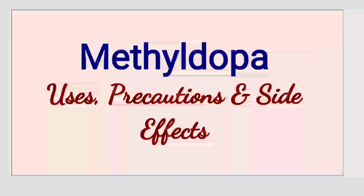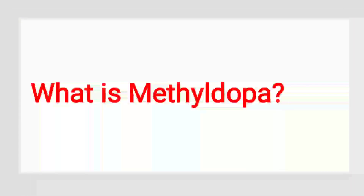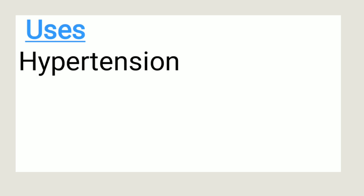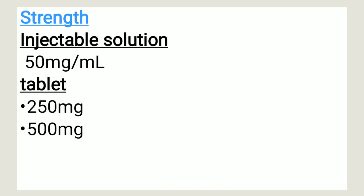Welcome back. In this video we're going to look at methyldopa — its uses, precautions, and side effects. Methyldopa is essentially an antihypertensive and it's available under the brand names of Aldomet, among many other brand names. It is used in the treatment and management of hypertension.